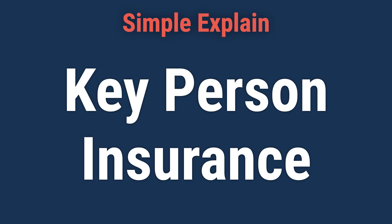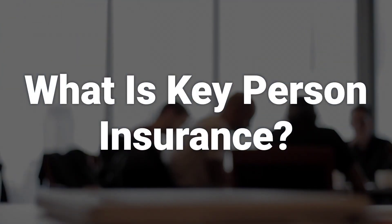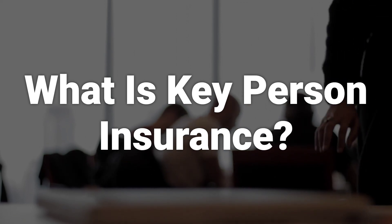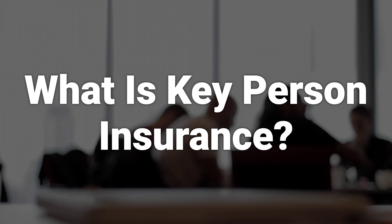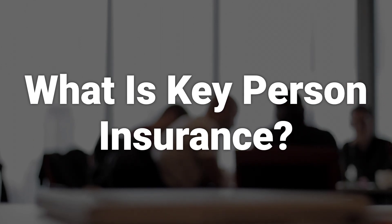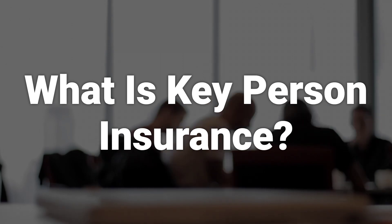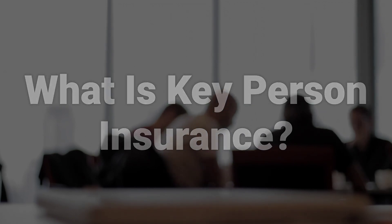Today, we will talk about key person insurance — its definition, cost, types, and how it works. Key person insurance is a life insurance policy that a company purchases on the life of an owner, a top executive, or another individual considered critical to the business. The company is the beneficiary of the policy and pays the premiums. This type of life insurance is also known as key man or key woman insurance and business life insurance.